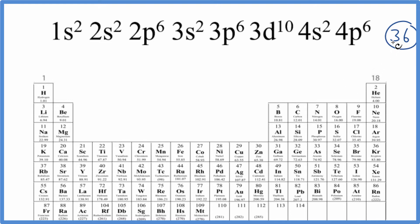We just need to find the element that has 36 as its atomic number. That's right here, krypton. So we know that this electron configuration ending in 4s² 4p⁶ is krypton.